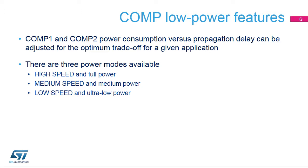The comparator can stay active even if the rest of the system is suspended and the clock is switched off. The comparator can trigger an interrupt on the rising, falling, or both edges of the comparator output through the EXTI line. The output can also be connected to the CPU's nested vectored interrupt controller, or NVIC.